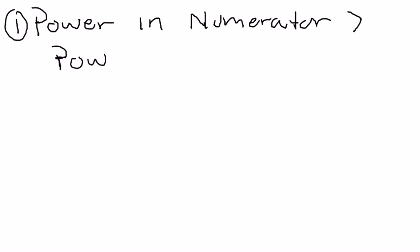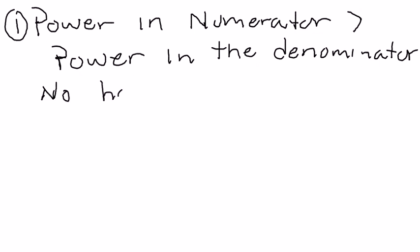If the power in the numerator is greater than the power in the denominator, then there's no horizontal asymptote. There might be a slant asymptote, but we don't look at slant asymptotes in this class.